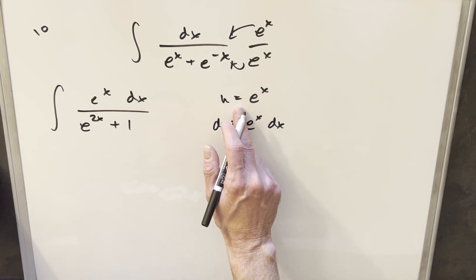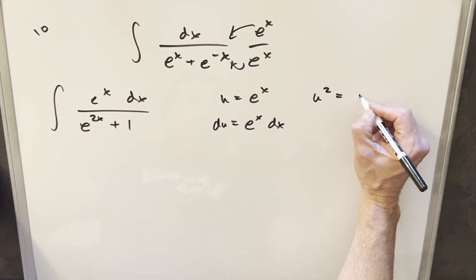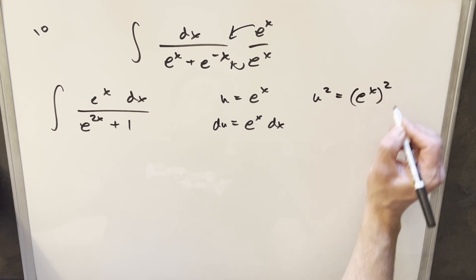Now for this denominator, if you take this first equation and square both sides, we have u squared equals e to the x squared. But then with exponent properties, we can just distribute this in and write this as e to the 2x.